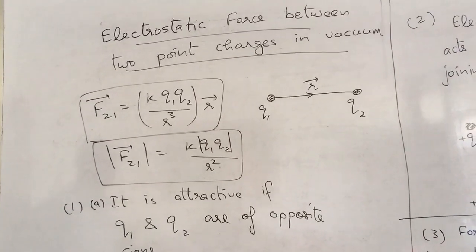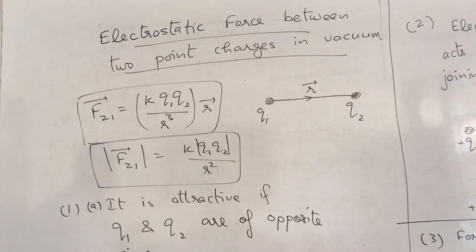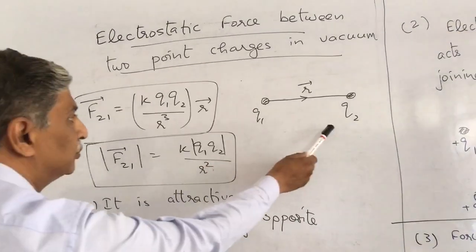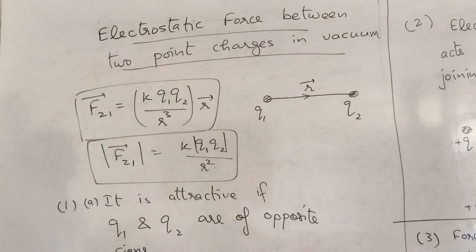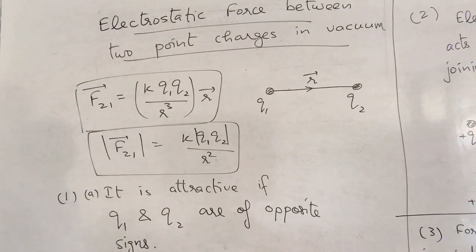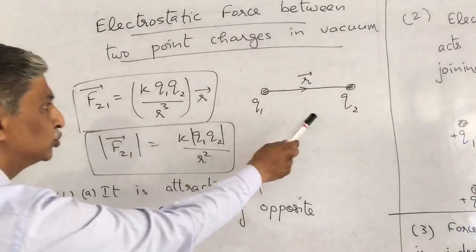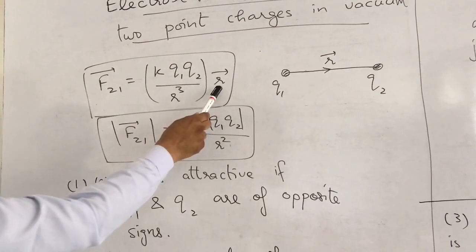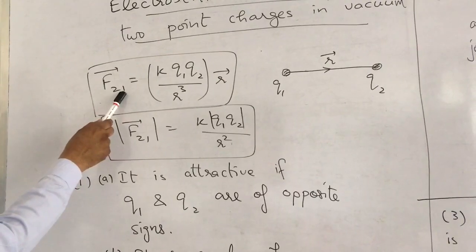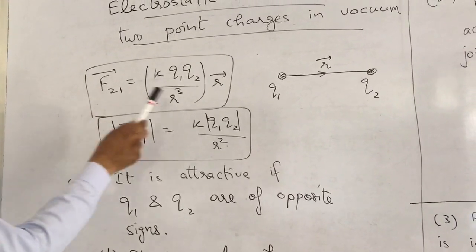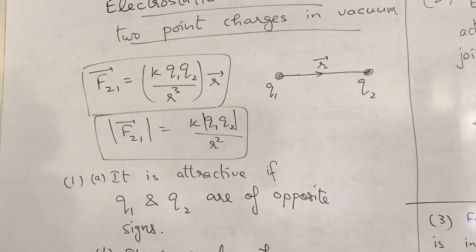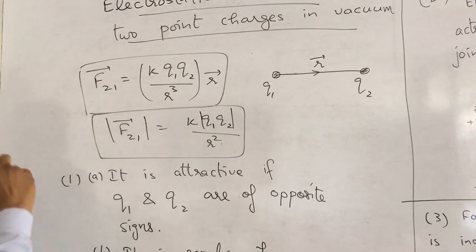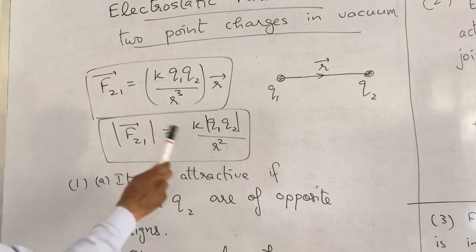I'll talk about electrostatic force between two point charges in vacuum. Let's take two charges Q1 and Q2, separated by distance R. According to Coulomb's law, the force between these two charges is KQ1Q2 upon R squared into R vector. This is F21 — force on charge Q2 due to charge Q1. The magnitude of this force is KQ1Q2 upon R squared.